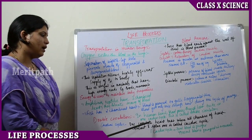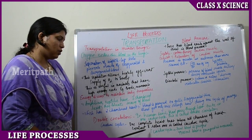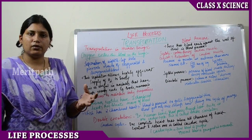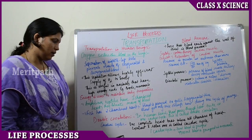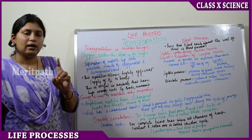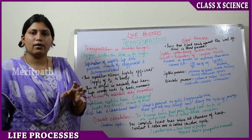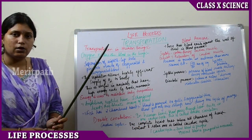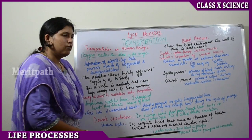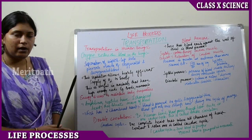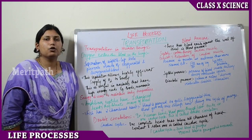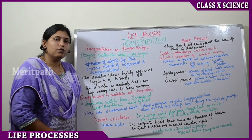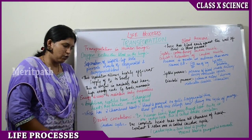The cardiac cycle is one complete heartbeat where all chambers of the heart — left and right ventricles and atria — contract and relax. In one cardiac cycle, 70 ml of blood is pumped. The normal heartbeat is 72 beats per minute, so approximately 4,900 ml of blood is pumped per minute.